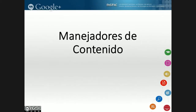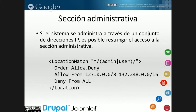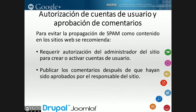De las recomendaciones generales para manejadores de contenido, lo primero es restringir el acceso a la sección administrativa. En caso de que exista un exploit para ganar acceso o sobrepasar las credenciales en la sección administrativa, podemos aplicar esta regla estándar de Apache, donde solamente permitimos a localhost y a un segmento de la UNAM, y negamos desde cualquier otra IP el acceso a /admin o a /user. Simplemente recargando la configuración de Apache ya podemos proteger esa sección administrativa. Otra cuestión de experiencia: en muchos sitios se pueden crear cuentas y publicar spam con ellas, con links a sitios que no tienen nada que ver con el contenido que queremos.